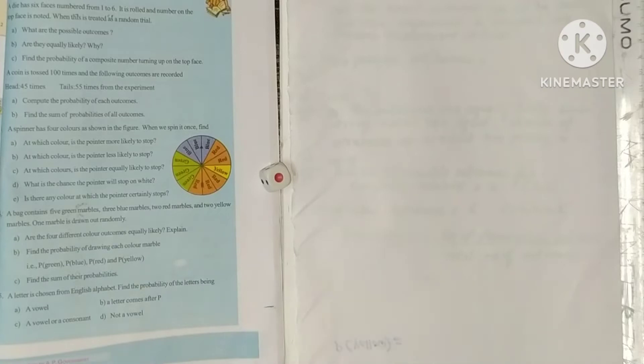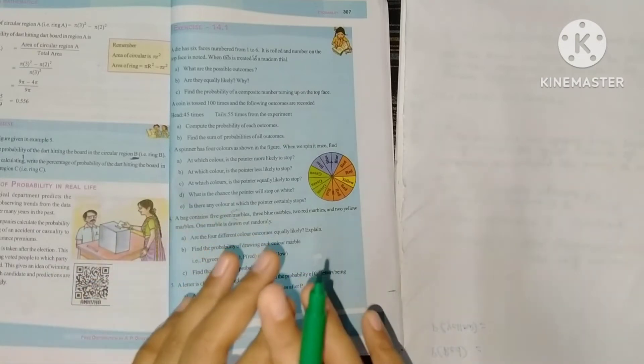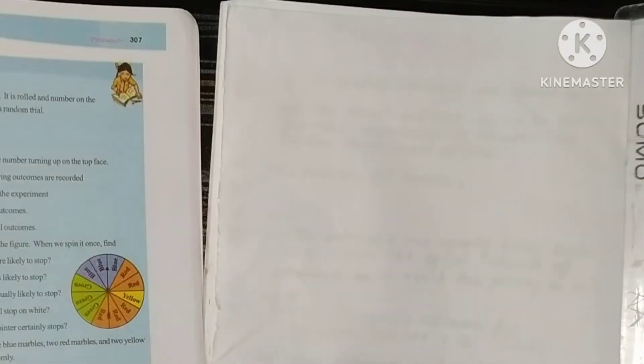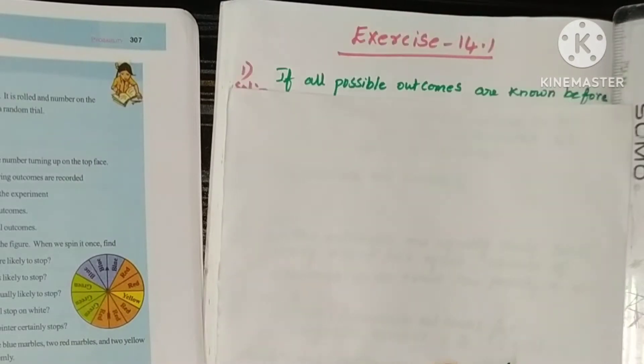So a die is rolled, the top face is noted. This is a random trial. How much is it? So random trial equals the same chances. Total outcomes are told, but the outcome cannot be predicted. So this is a random trial. See here.